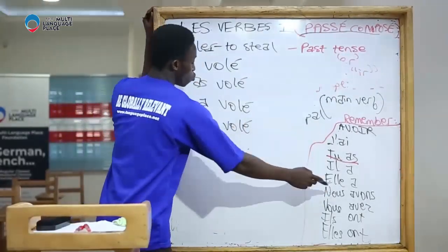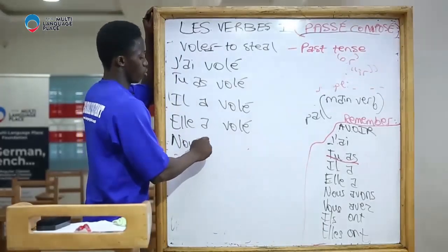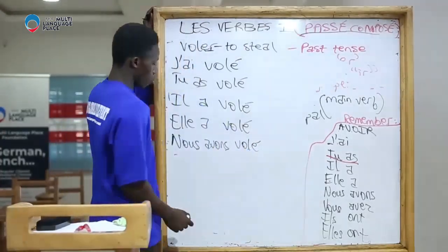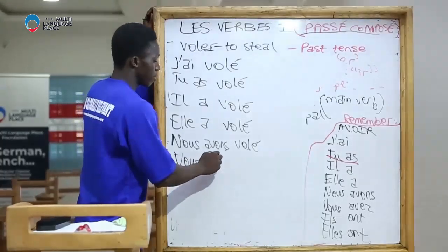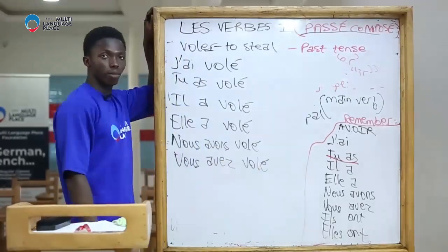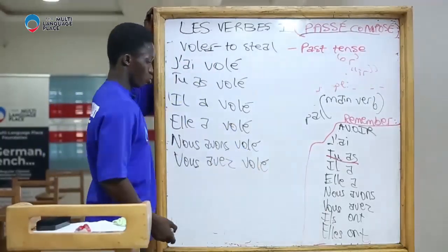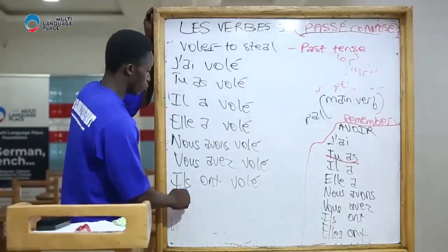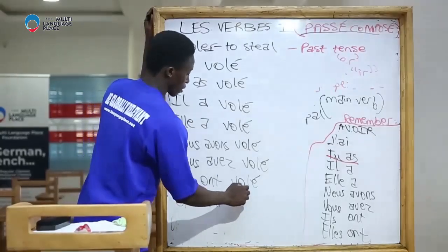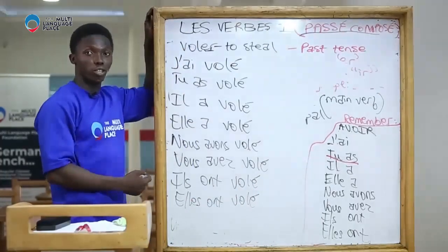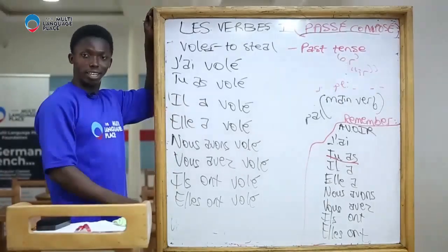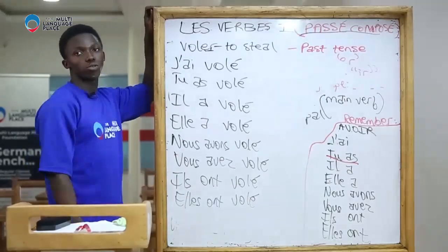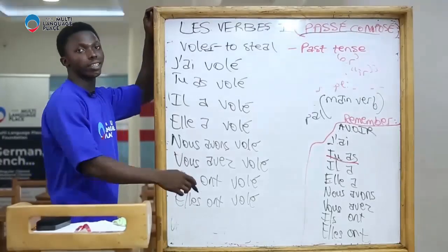For we stole: nous avons volé. For you stole: vous avez volé. For they stole: ils ont volé et elles ont volé. Très bien. I stole — j'ai volé. You stole — tu as volé. He stole — il a volé. She stole — elle a volé. We stole — nous avons volé. You stole — vous avez volé. They stole — ils ont volé, elles ont volé.